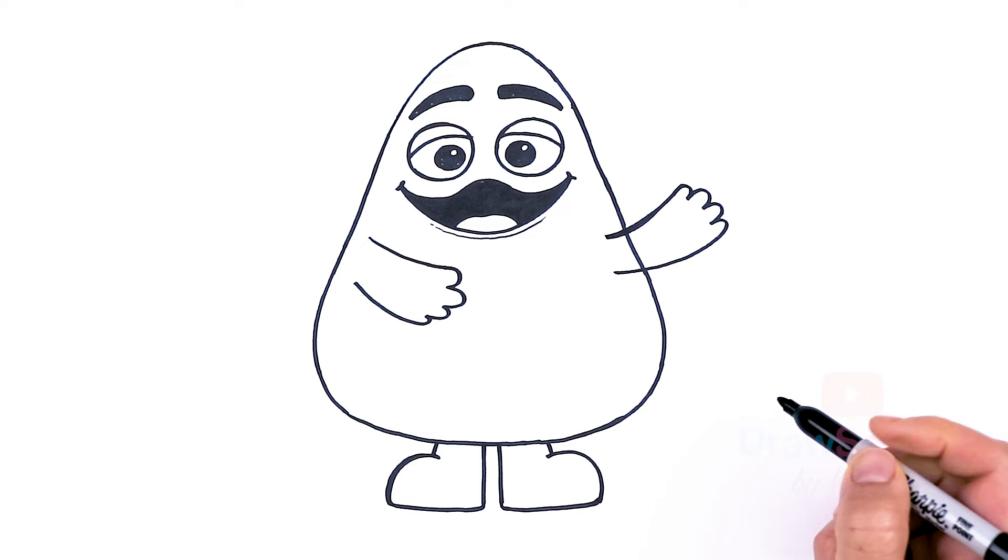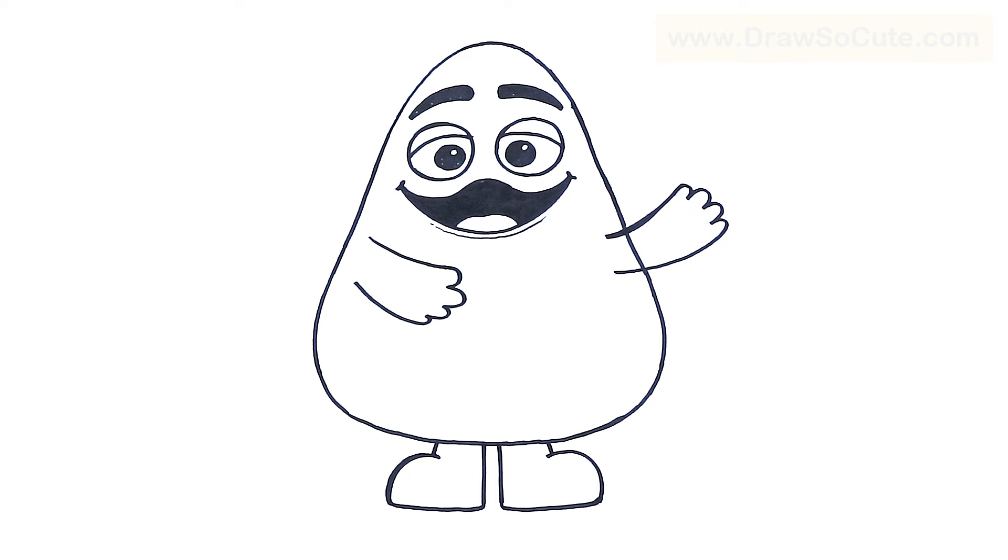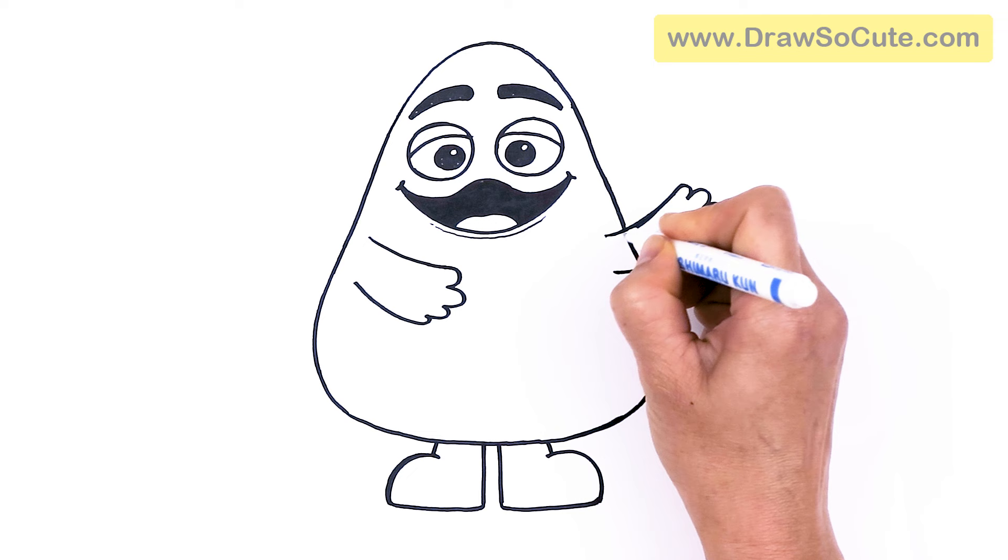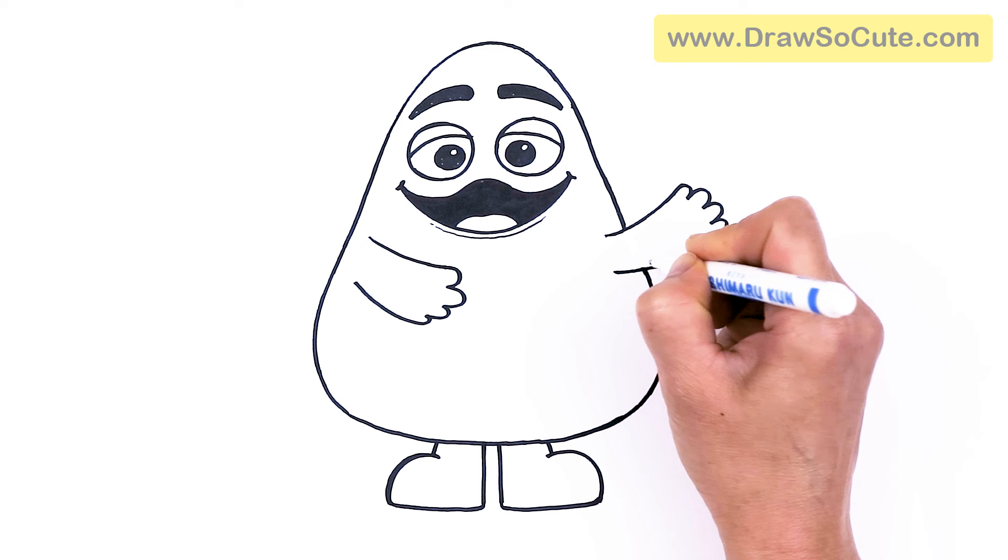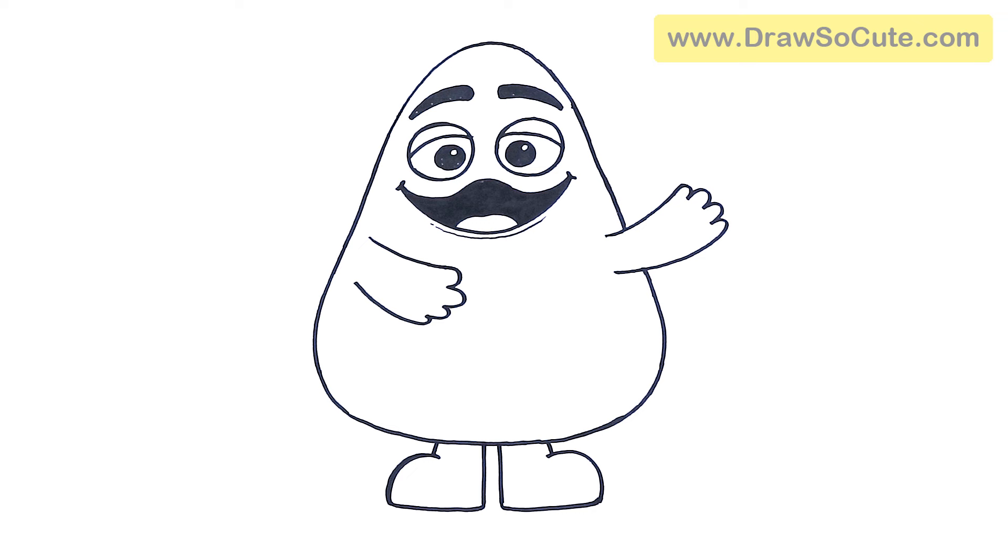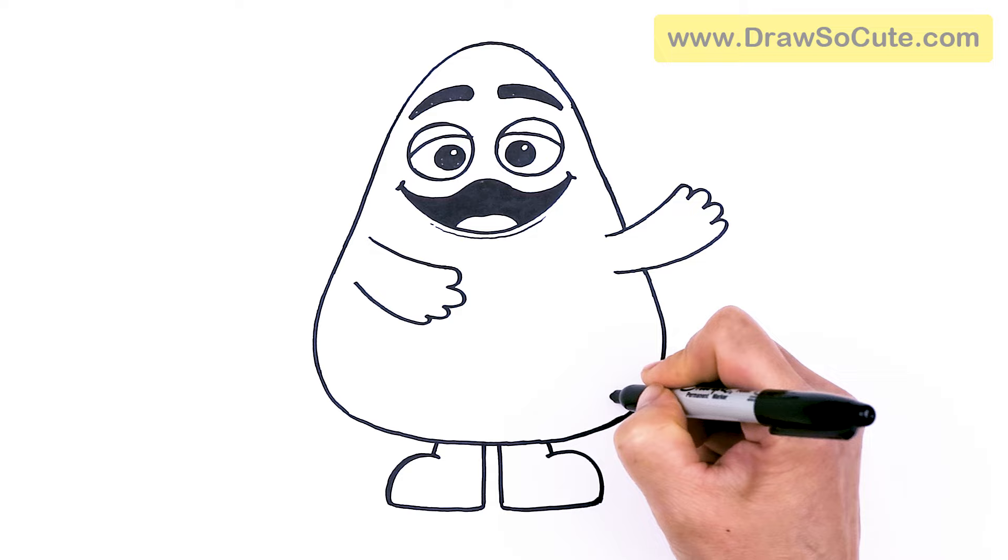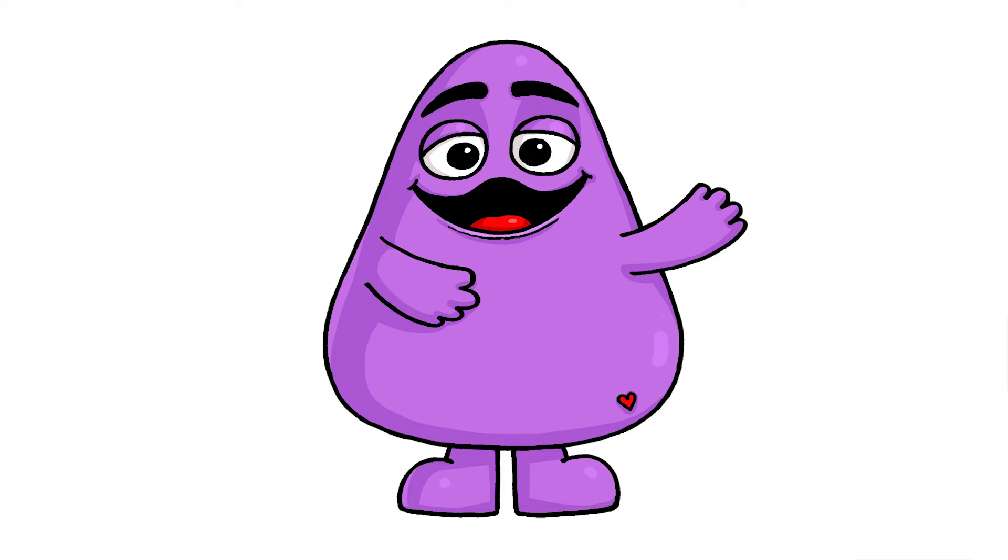So now he's waving, right? Or like I say, you can have them both just like this and come in here really quick. My white out pen and erase this line. And let's see if I'm missing anything. That's pretty much it, except I'm going to add, of course, and add a heart right here to make this my Draw So Cute Grimace from McDonald's. I really hope I helped you draw him fun and easy today.